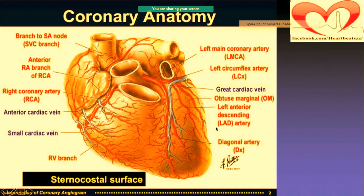The normal principle is if there is an artery, there will be an accompanying vein as well. The major veins are the great cardiac vein, anterior cardiac vein, and small cardiac vein. The arteries: on the right side is the right coronary artery, which gives the anterior branch and also branches to the SA node — located near where the superior vena cava originates. If a patient has RCA block, they may have problems related to those branches.